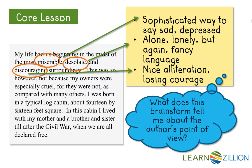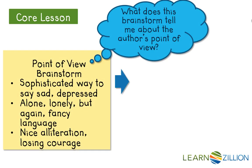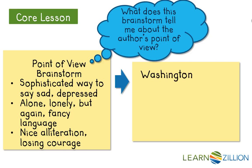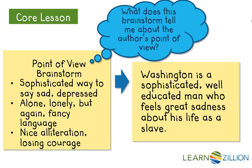Now that I've got a brainstorm on my sticky note, I'm thinking to myself, what does this brainstorm tell me about the author's point of view? Washington is a sophisticated, well-educated man who feels great sadness about his life as a slave. I took those adjectives, sophisticated and well-educated, directly from my brainstorm about those terms that he used in that paragraph we re-read. So you can see exactly where this all came from.